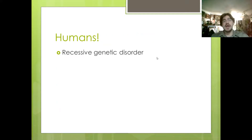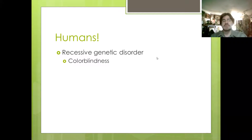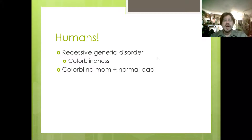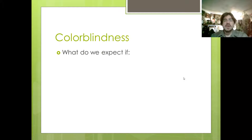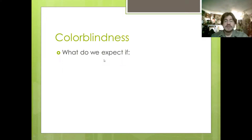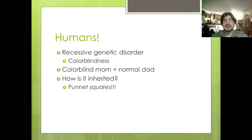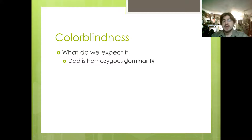Let's talk about recessive genetic disorders again. In this case we're going to mention colorblindness. We have a colorblind mom and a normal-sighted dad, and we want to find out how colorblindness is inherited — in other words, we want to find out dad's genotype. If dad is homozygous dominant, then homozygous dominant times a mom with colorblindness, which is recessive, you get all heterozygous — none of the children are expressing colorblindness.